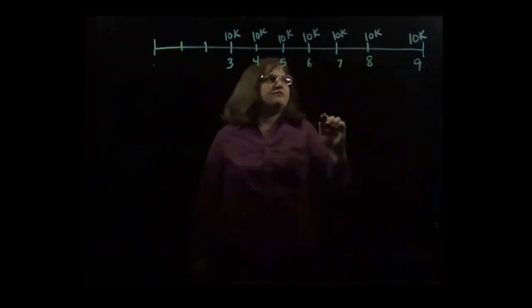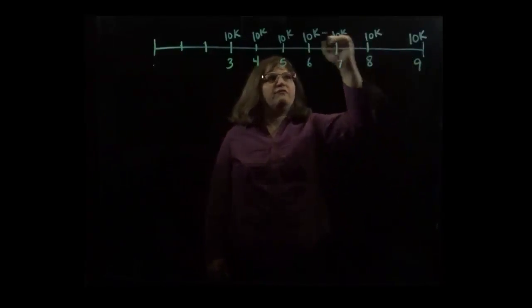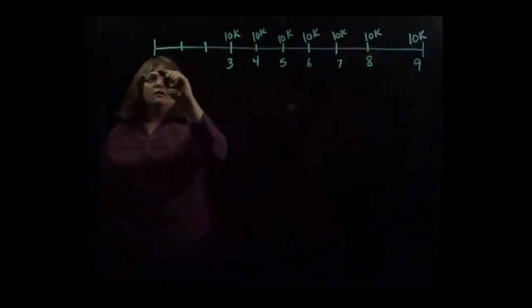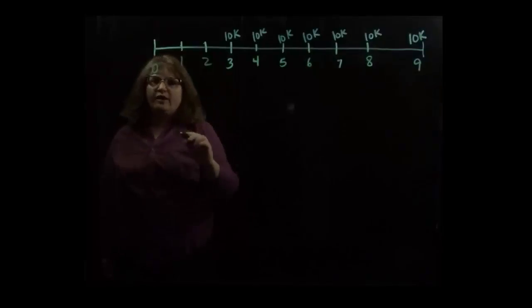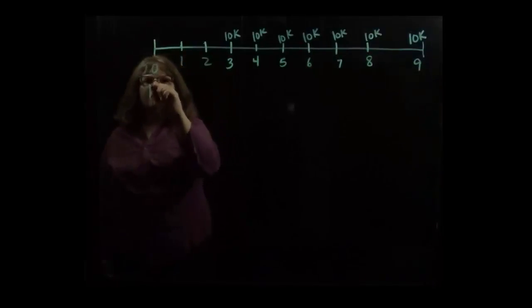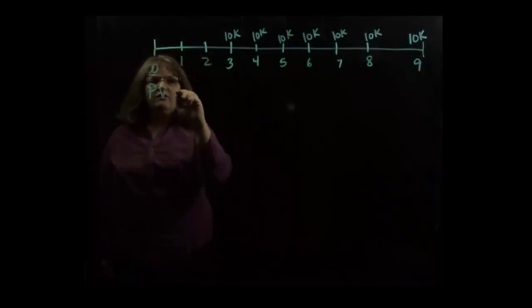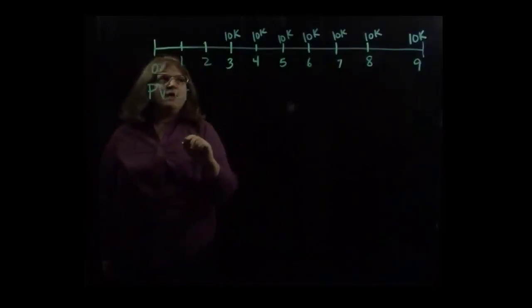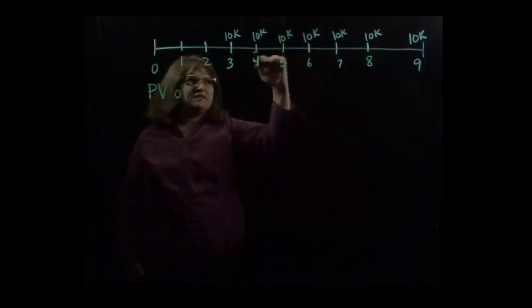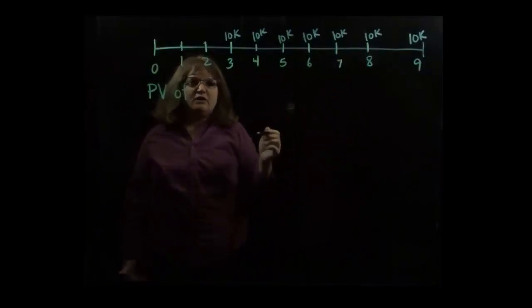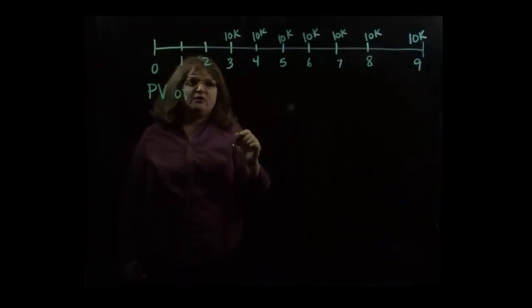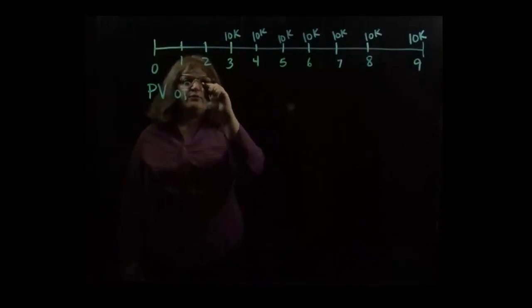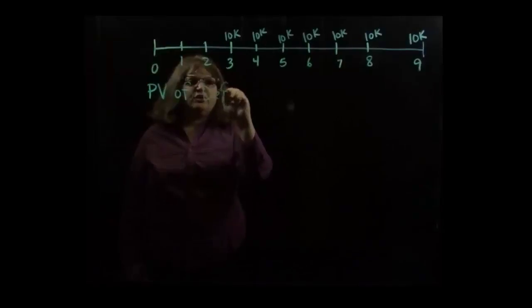What we're trying to figure out is what is the value of this payment stream here at time equals zero, the present. So what we're trying to get is the present value of this payment stream. And this payment stream, whenever we have a payment stream that's equal amounts over equal periods of time, that is an annuity, but when the first payment is delayed beyond one period, then that's what we call a deferred annuity.